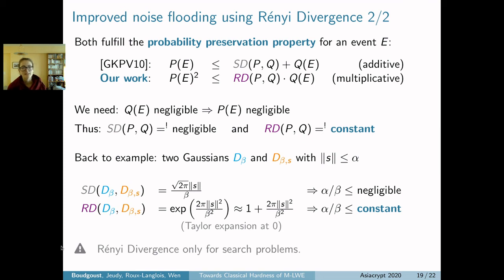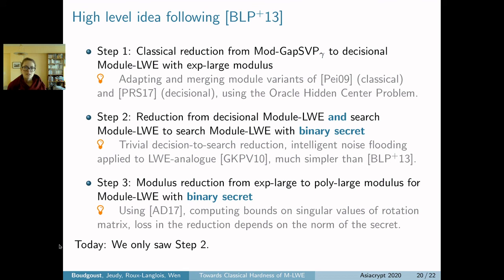One caveat is that Rényi divergence only works for search problems. This is why we do it for the search variant and do a search-decision reduction at the end. That was the high-level: step one, step two, step three. Today we only saw step two, but if you're interested in step one and step three, I invite you to look at the paper.